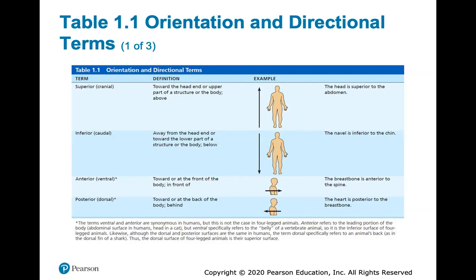Anterior and posterior: anterior is toward the front of the body, posterior is toward the back or behind. You should be familiar with the words ventral and dorsal — ventral refers to anterior and dorsal refers to posterior. For example, the sternum is anterior to the spine, and the heart is posterior to the breastbone or sternum.